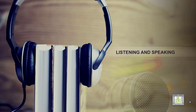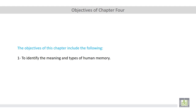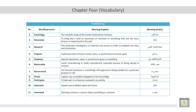The objective of this chapter is to identify the meaning and types of human memory. Now let's move to the vocabulary log of this chapter.